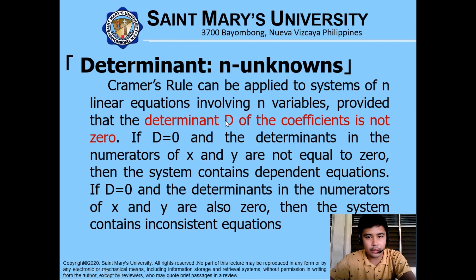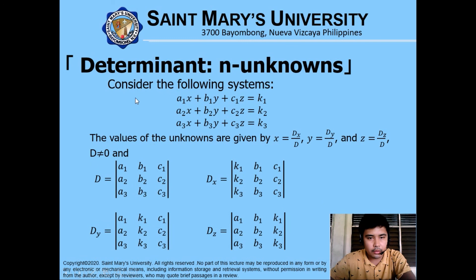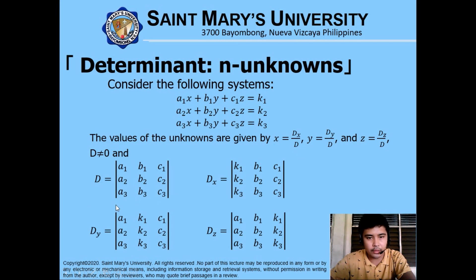Cramer's rule can be applied to n linear equations — it can be 3 or more — provided again that the determinant D of the coefficients is not equal to zero. Consider a system of three equations. The unknowns are found the same way as with two unknowns: x equals Dx over D, y equals Dy over D, and z equals Dz over D. The denominator D is found using the coefficients of the three equations.